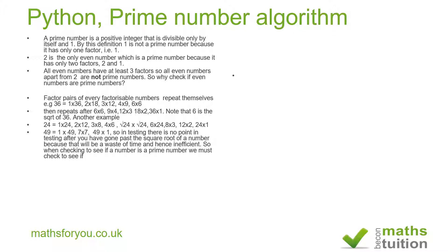Take 49: to check if it's prime, you divide by 2, 3, 4, 5, 6, then 7. When you reach 7, you find that 49 divided by 7 gives a remainder of zero, so 49 is not a prime number. There's no point going beyond the square root.